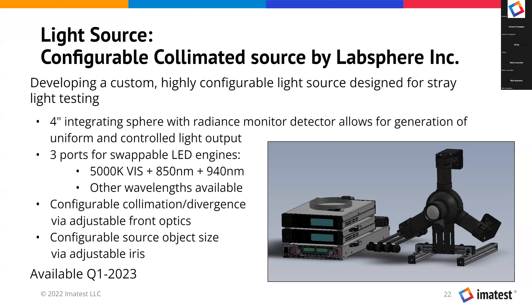The main purpose of this light source is to produce collimated light — it has adjustable front optics that let you produce a collimated beam, or also a diverging beam if you'd want. It also has an adjustable iris inside the optics, which lets you control the size of the light source as seen by the camera, which is really important to the measurement. 所以这个测试上面非常重要的一个就是它的轴向还有方向是非常好地被控制和调整，还有拍摄物体的尺寸大小。We're expecting this equipment to be ready at the beginning of 2023.